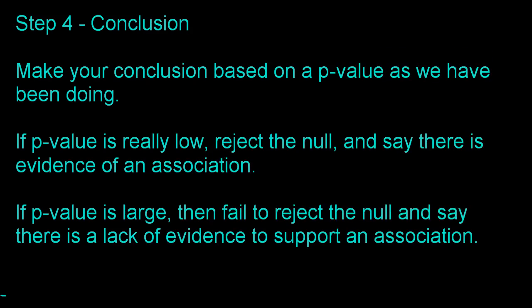Step four is the conclusion, based on a p-value. If your p-value is really, really low, you reject the null and say there is evidence of an association — your data is very unlikely to occur by chance if independence were true. If your p-value is very large, you fail to reject the null and say there is a lack of evidence to support an association, meaning your observed data is quite likely assuming independence.